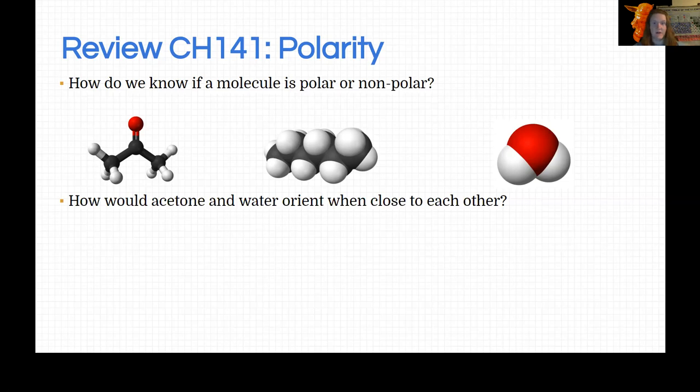At any rate, we have three different molecules here and this is kind of a quick review from 141. You should be able to predict based on these models what kind of polarity each molecule has. Remember that polarity is not based on the bonds, right? We've had two different kinds of polarity that we talked about in gen chem one: we had bond polarity.